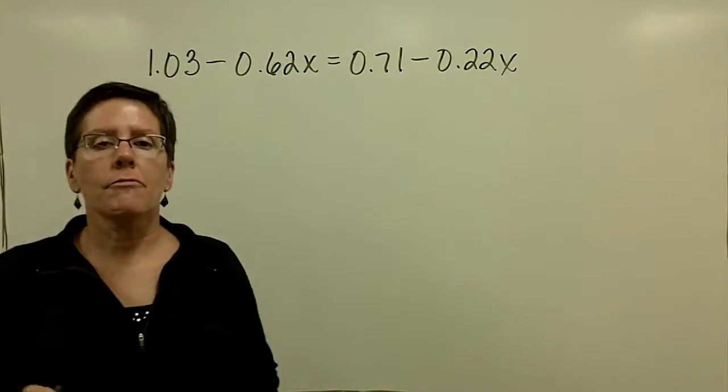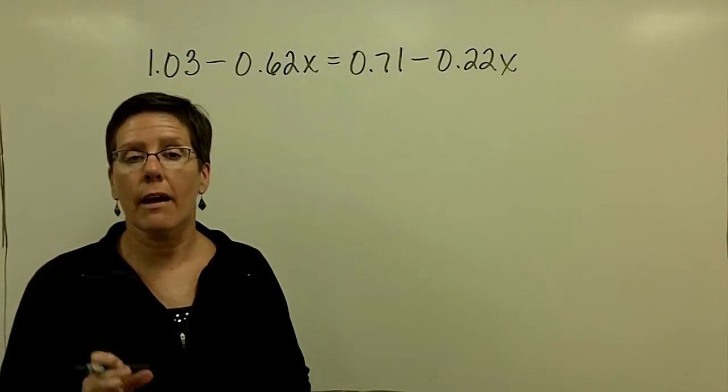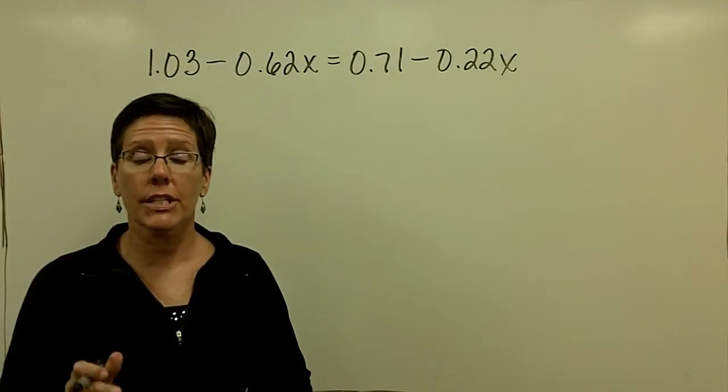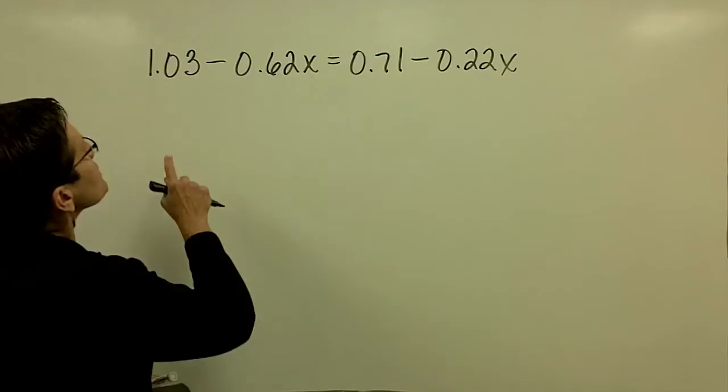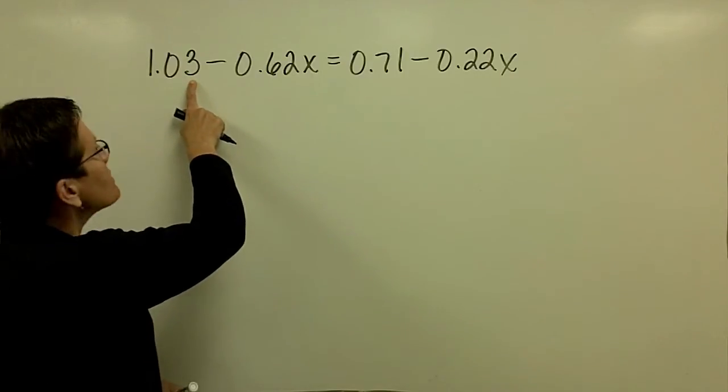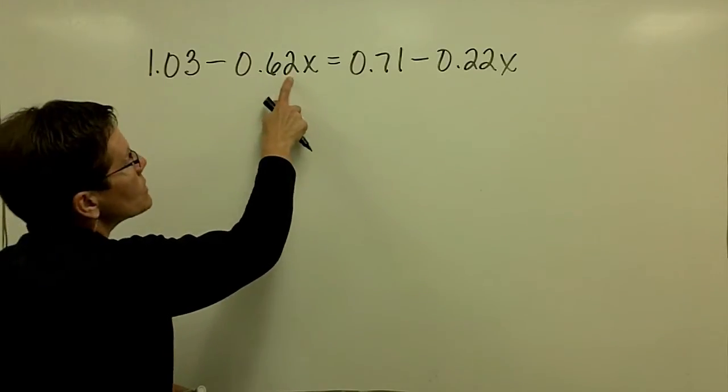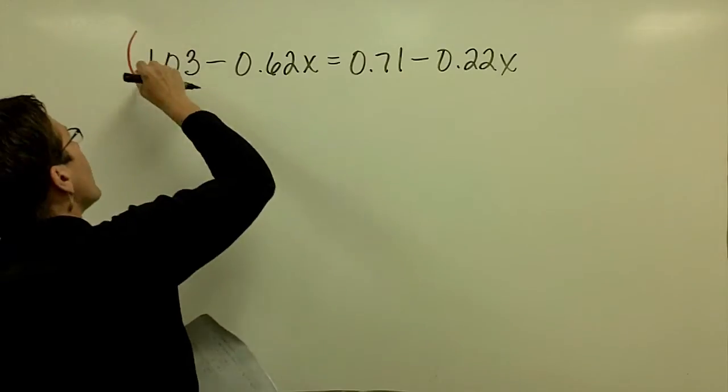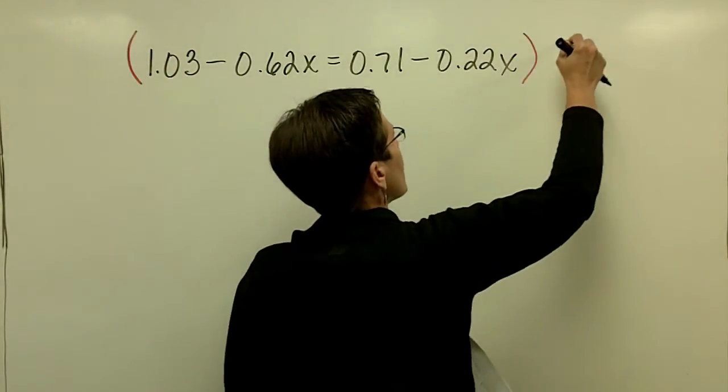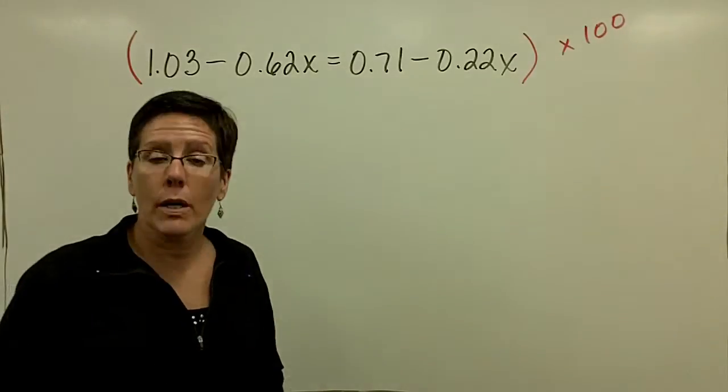While you don't have to do what I'm going to ask you to do right now, I think it's much easier whenever you have decimals in a problem to clear the whole equation of the decimals. And so because this problem has numbers in the hundredths place, 1.03, that's in the hundredths place, the 2 is in the hundredths place, the hundredths place, the hundredths place, I'm going to multiply both sides of this equation by 100.